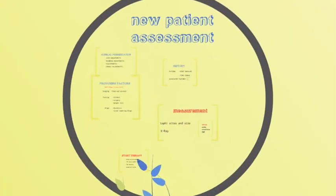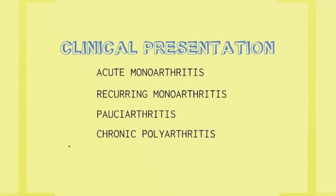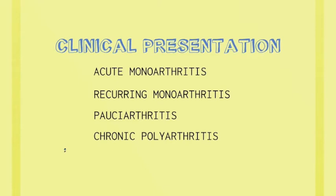In a new patient assessment, look at the clinical presentation. Has the patient presented with acute monoarthritis, or do they have recurring monoarthritis? Note the interval between attacks and the number of attacks per year — the more frequent the attacks, the more imperative it is to start treatment, as that pattern will almost certainly continue unless interrupted. Involvement of more than one joint and chronic polyarthritis are indicators of a need for more urgent treatment.